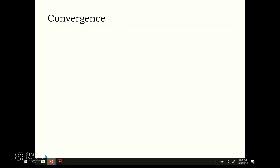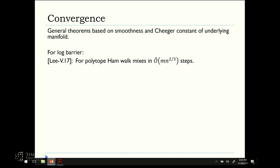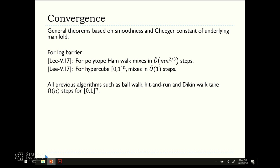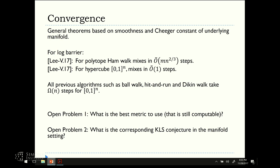So, convergence, we have some general theorems, which assume smoothness of the function and the metric and a Cheeger constant and tell you what the convergence rate will be. For the log barrier in a polytope, this is the bound, MN to the two-thirds steps. For a hypercube, it's just polylogarithmic. All the other previous methods take at least N steps, even for a hypercube. Of course, you know how to sample hypercube in log N steps anyway, but you can do it this way. So, one question is what's the best metric to use? I don't know.